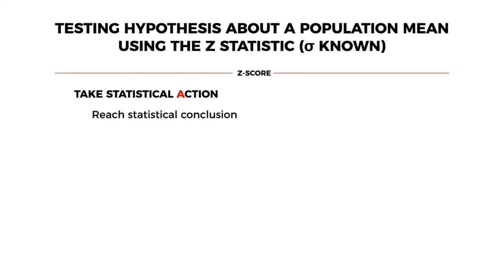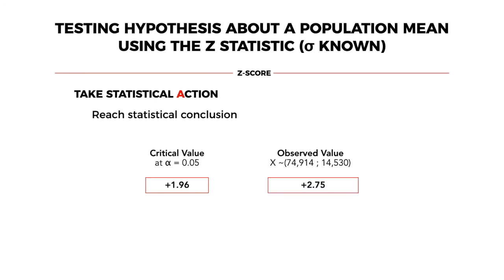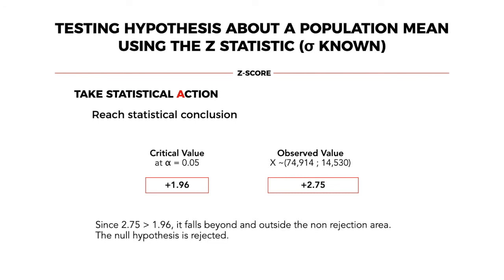The next step is to take statistical action, which is to reach a statistical conclusion. Our critical value stated in the decision rule is that at alpha equal to 0.05, the Z-score threshold is 1.96. If we have a value that falls beyond positive 1.96 or less than negative 1.96, then that value will be in the rejection zone. The observed value — the value we computed — is positive 2.75. Since 2.75 is greater than 1.96, it falls outside the non-rejection area. Therefore, the statistical action we are taking is that the null hypothesis is rejected.